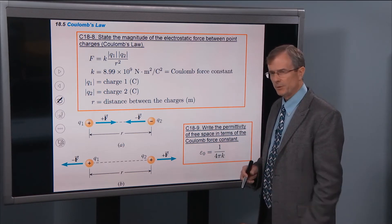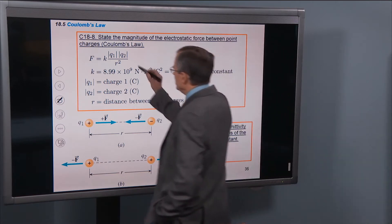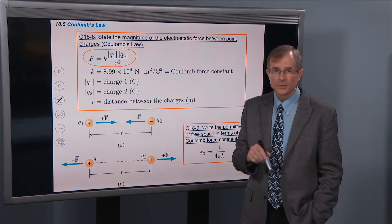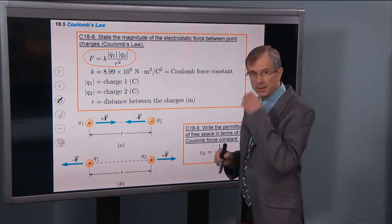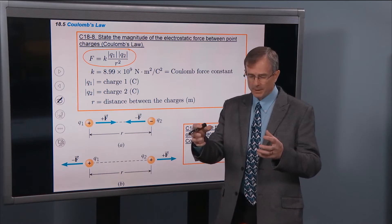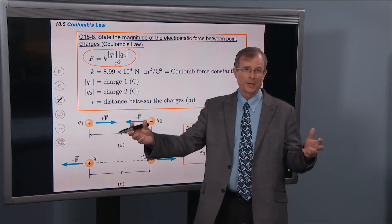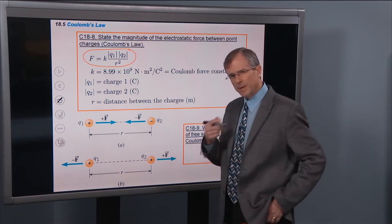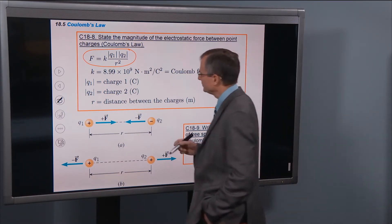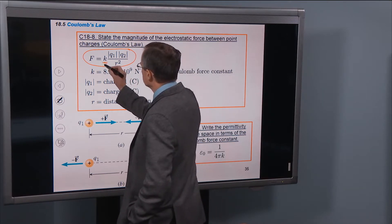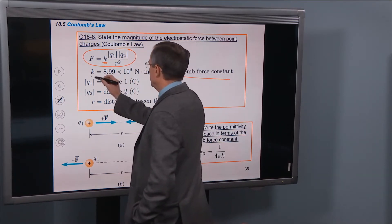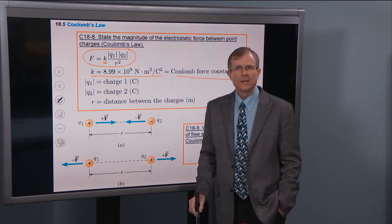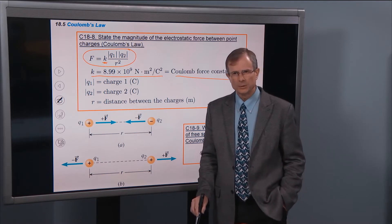Coulomb's law has a very similar form. The force between two charges — the magnitude of that force — we're not going to worry about direction now because we already know about direction: two positive charges repel, a positive and a negative attract, etc. So we're just worried about the magnitude of the force. There's a constant called the Coulomb force constant, and its value is 8.99 times 10 to the 9 Newton meters squared per Coulomb squared.